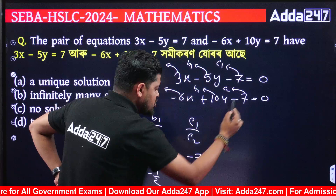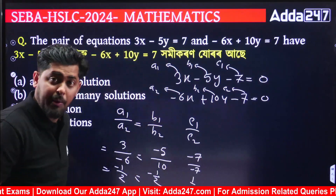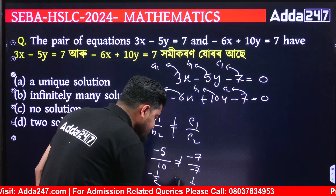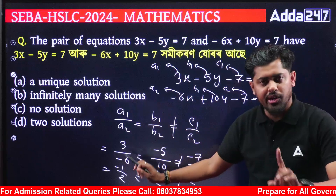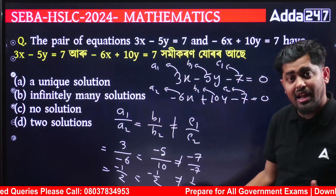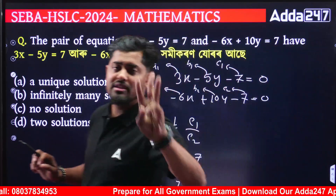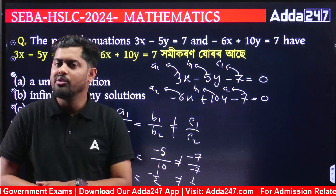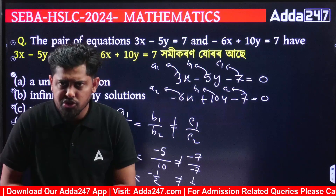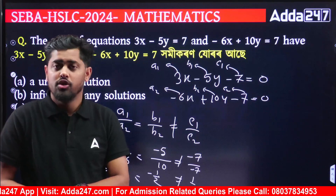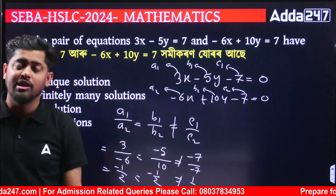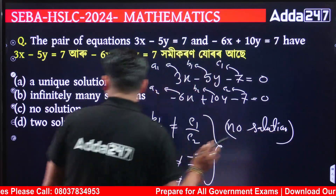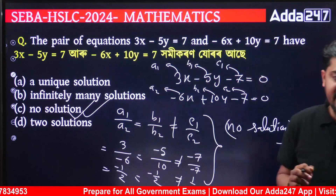C1 by C2: C1 is 7 and C2 is minus 7, so C1 by C2 equals minus 1. Since A1/A2 equals B1/B2 but is not equal to C1/C2, we have three conditions. The same is the correct answer — it is the correct answer.